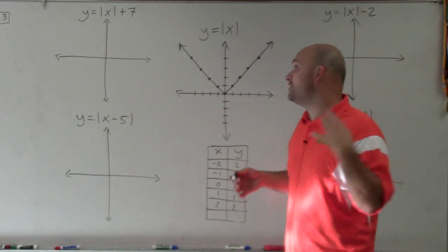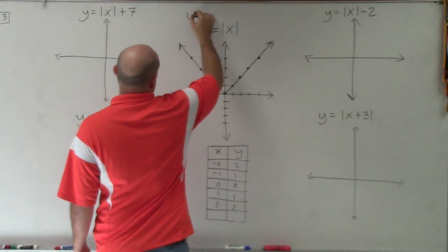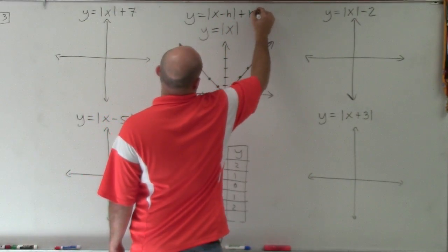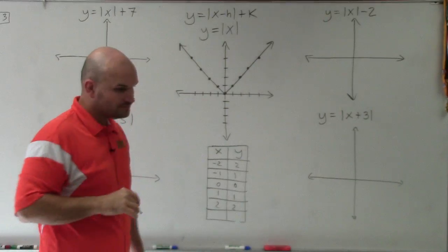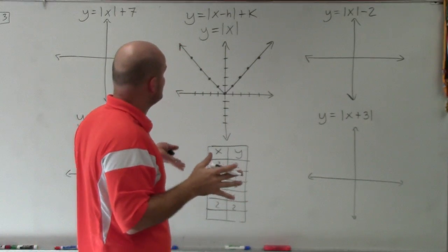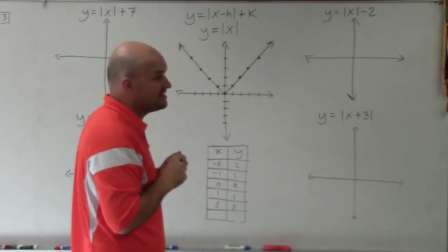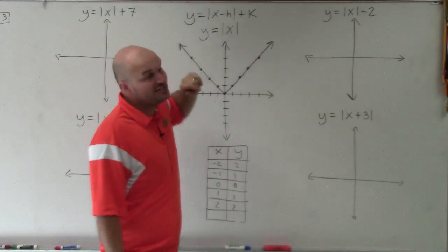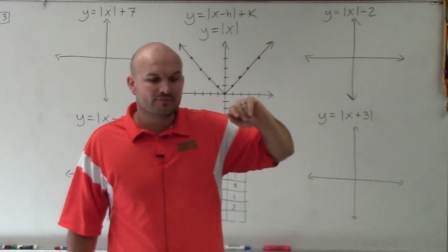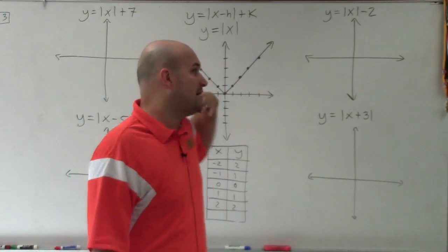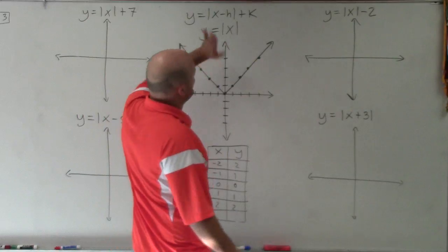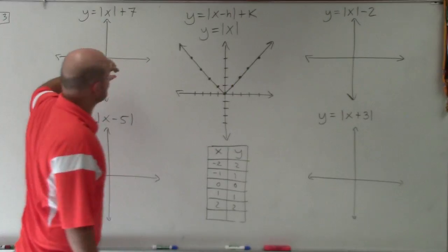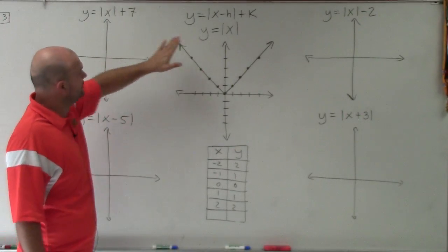To understand that, we need to know our transformation form. The transformation form is the absolute value of x minus h, plus k. h and k are going to represent different transformations: k is going to represent the vertical transformations, and h is going to represent the horizontal transformations. We'll get to the opposite behavior of h in a second.